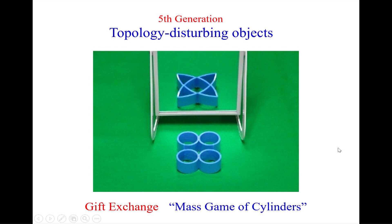The fifth generation is a topology disturbing object, in which not only the shape of the object but also the way of connection changes in the mirror. This object is included in the gift exchange set, so please enjoy yourself.